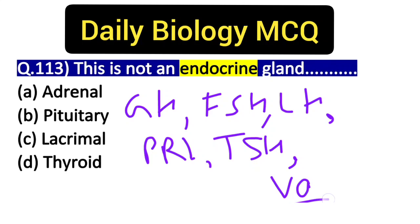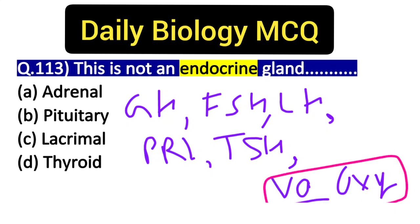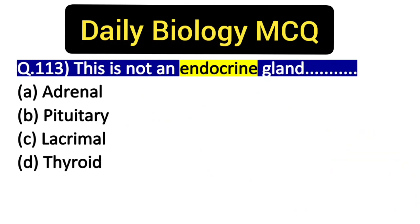Vasopressin and oxytocin are also associated with the pituitary gland. However, students should remember that these two hormones are actually produced in the hypothalamus — the pituitary gland only releases them. So don't confuse them: vasopressin and oxytocin originate in the hypothalamus, but the pituitary gland assists in releasing them.